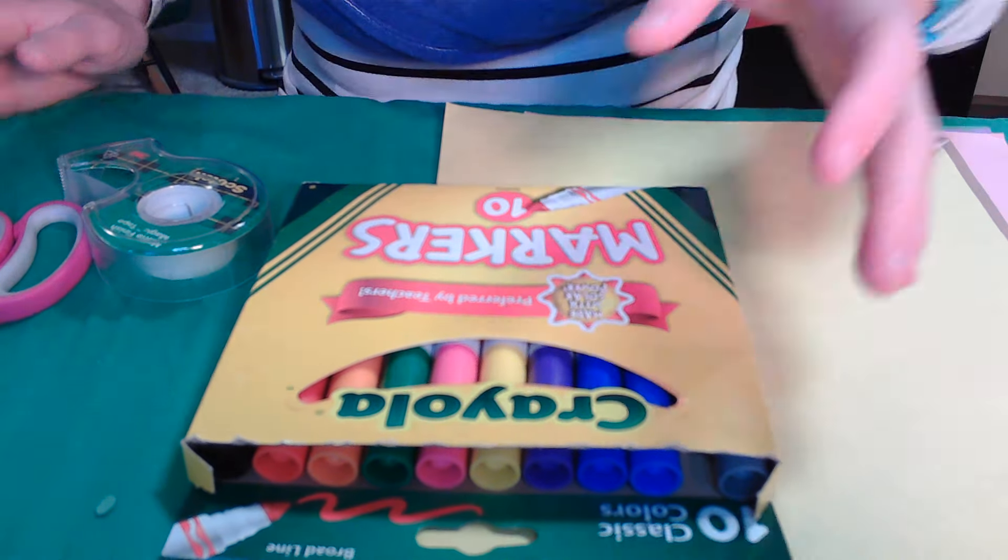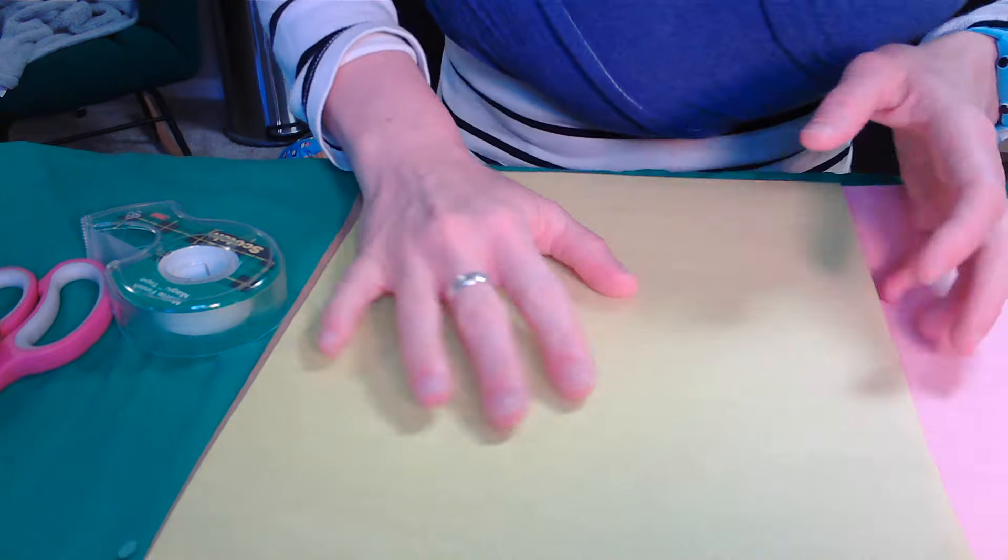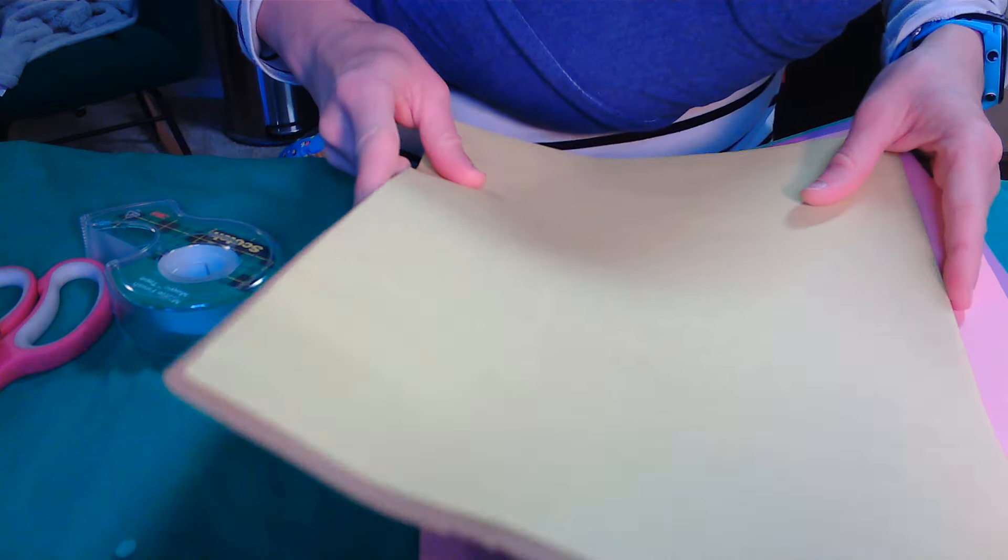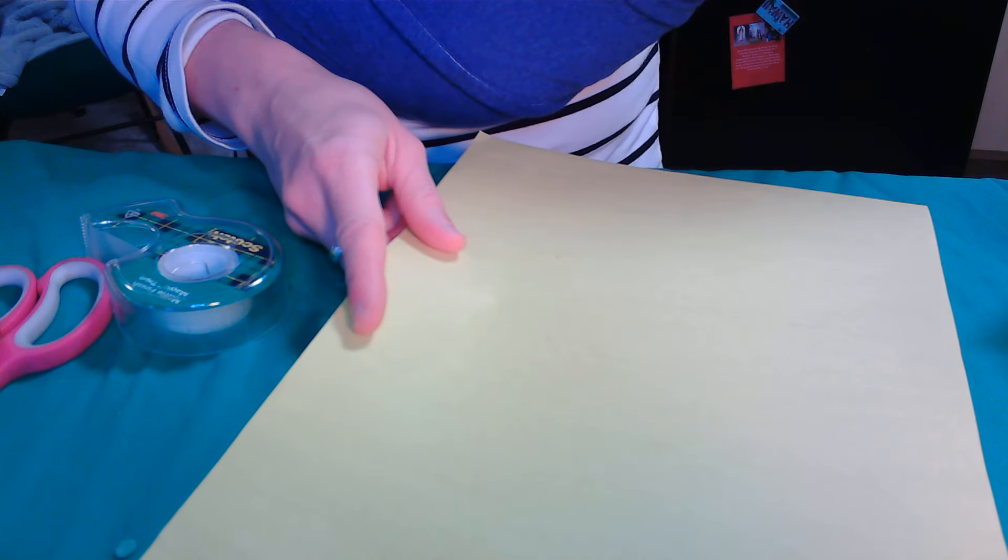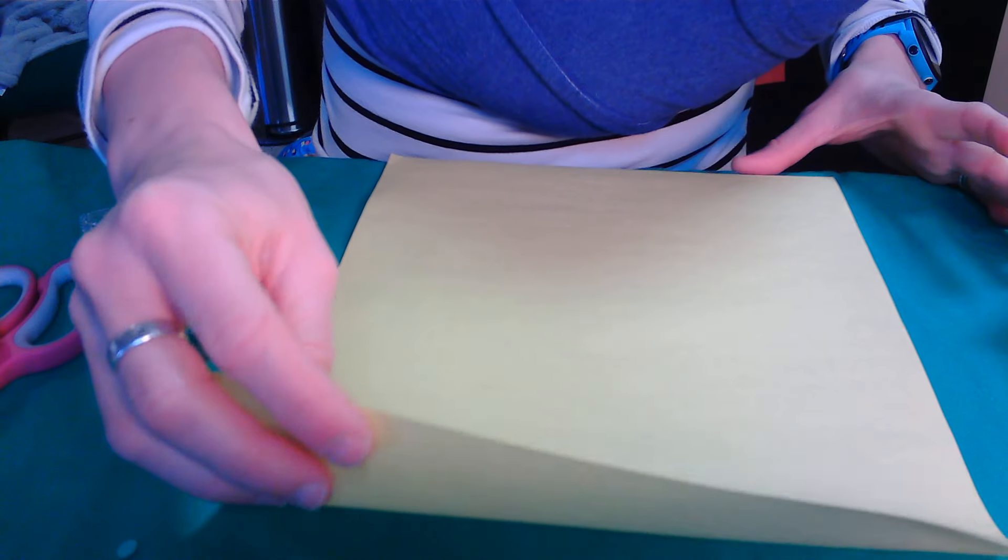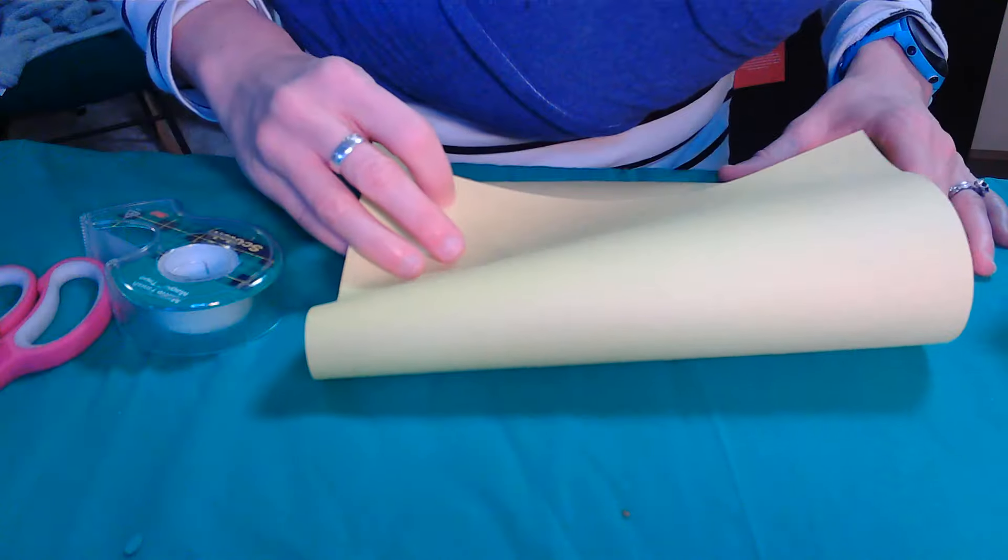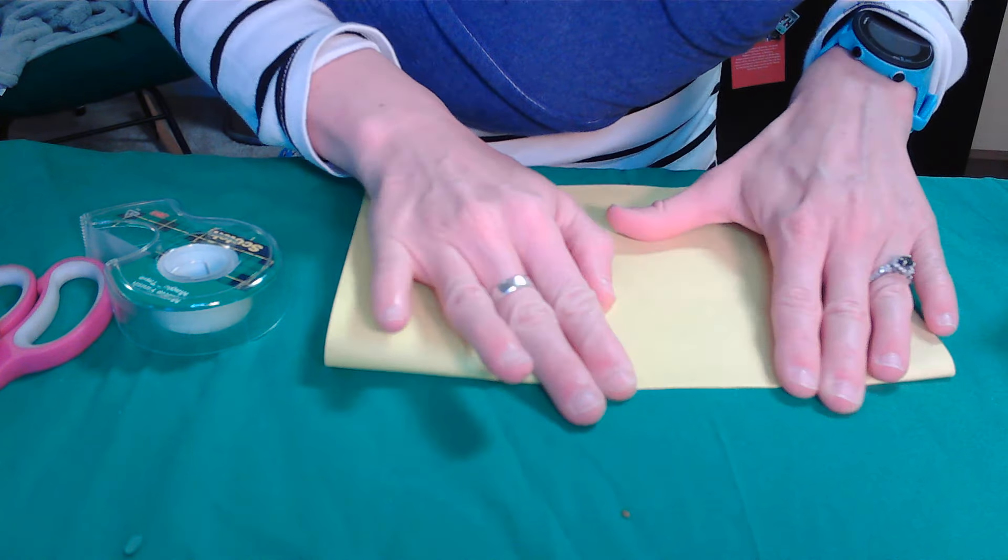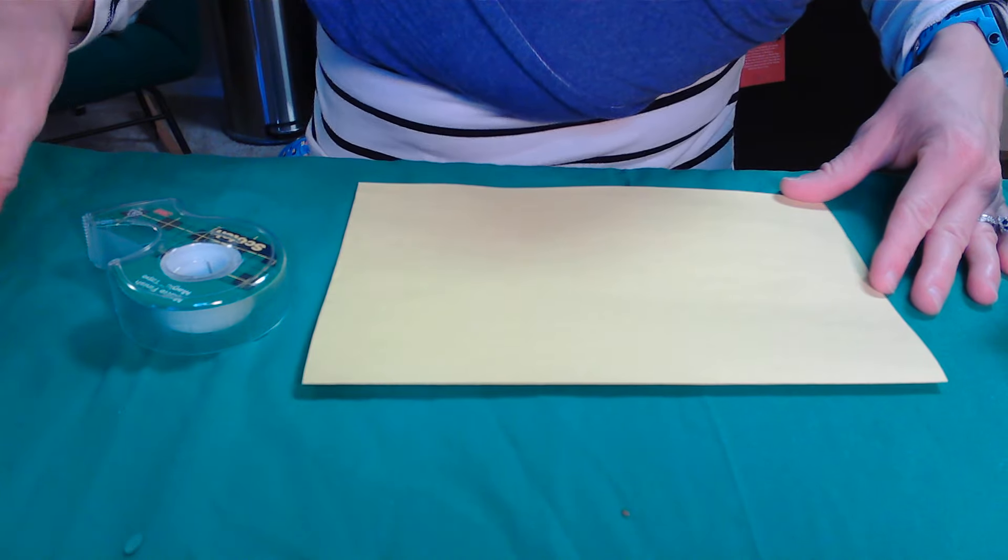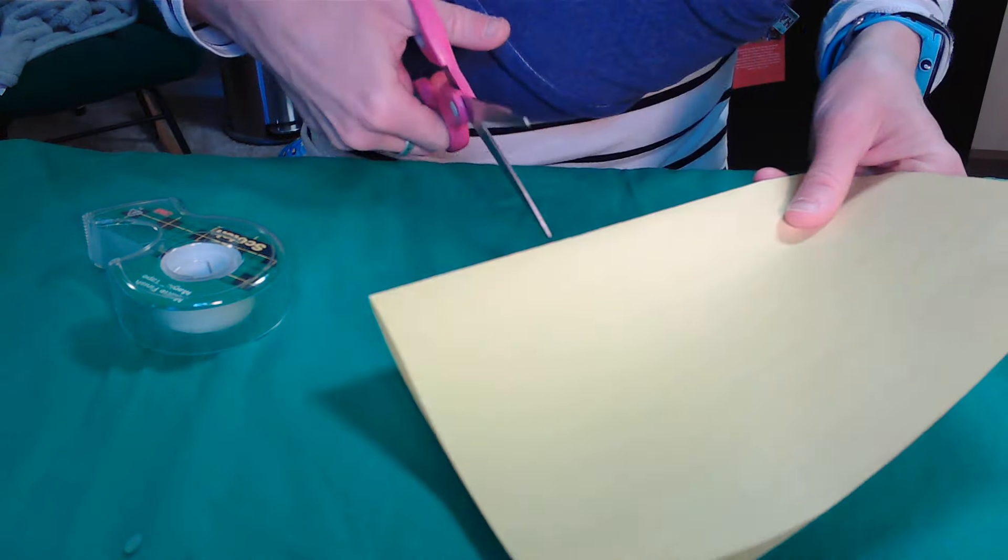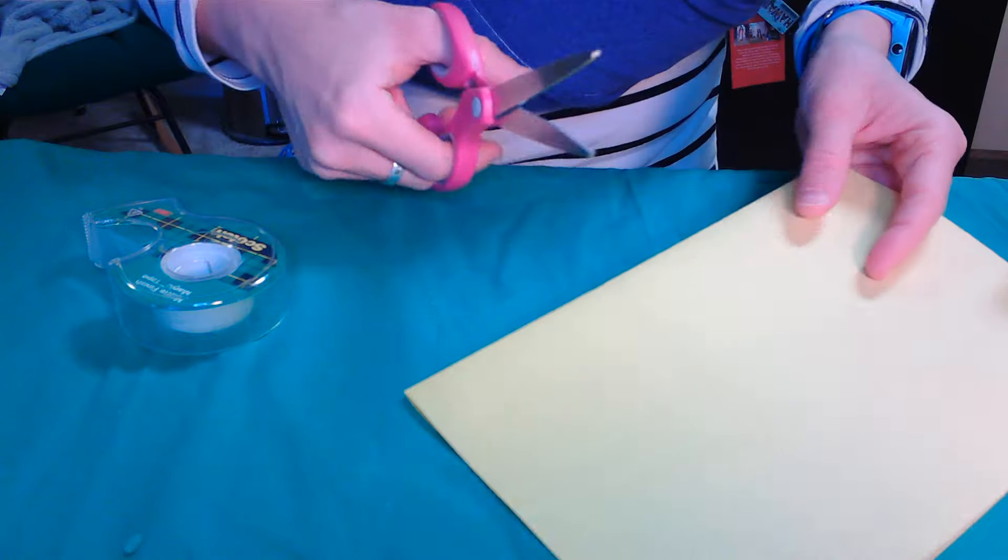Our first craft today is going to be a pop-up card that reminds us that it's not what we know, it's who we know that matters. So we're going to start off with some construction paper. And we're going to do this the simple way. There's a couple of different ways that we can make pop-up cards, but this is really the most basic and simple for anyone to be able to do. So we're going to fold our paper in half. And before we get carried away further, we're going to cut our pop-out so that we don't get other things in the way of it.